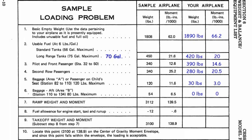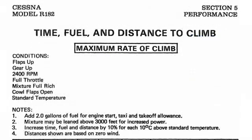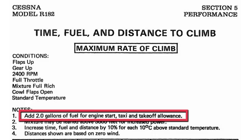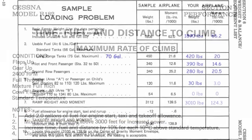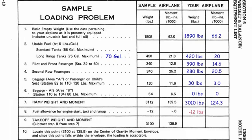Now we add up the weight column, giving us 3,010 pounds, and the moment column, giving us 124.3. This is our ramp weight — what the airplane weighs when we all get in. But we also have to account for starting, taxiing, and the run-up. According to Cessna that takes two gallons, which is 12 pounds of fuel, so we subtract 12 pounds and minus 0.6 from the moment, just as shown in Cessna's sample problem.